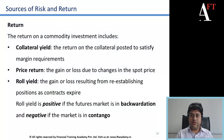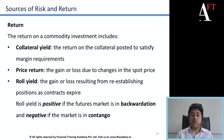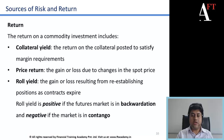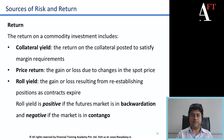The roll yield will be positive if the futures market is in backwardation — that is, where futures prices are below the spot price. The roll yield will be negative if the market is in contango — that is, where futures prices are above the spot price. It is very important to remember the relationship between roll yield and whether the market is in contango or backwardation.